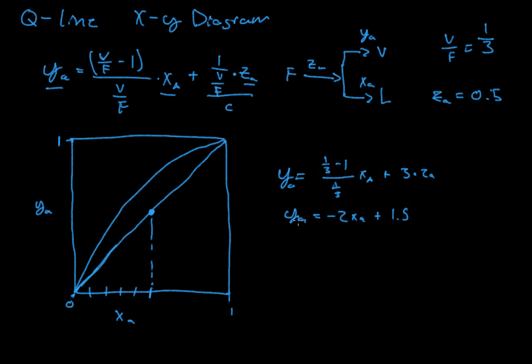So then YA simplifies to negative 2 XA plus 3 times 0.5, 1.5. If I'm doing everything correct, I might not be. I think I am though. So when Y is 0 or when X is 0, which is right here, when XA is 0, Y is equal to 1.5.